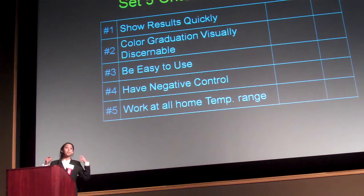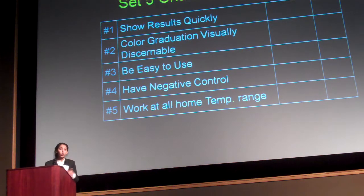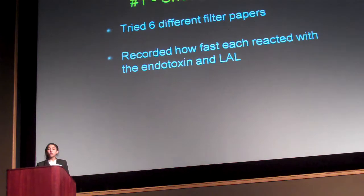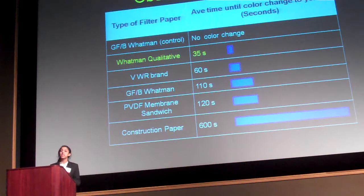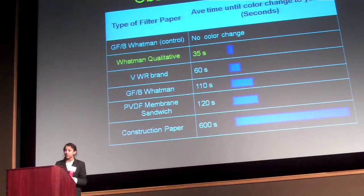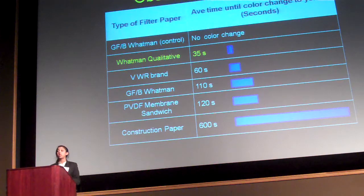When visualizing my test, I was thinking of something along the lines of a litmus test — working similar to a dipstick. I set a set of goals for myself. My first goal was that the test had to show quick results. I tried different types of filter paper with the LAL test, and whichever worked fastest was used for the remainder of my experiment. I found that Whatman qualitative filter paper worked the best, and it worked within 35 seconds.